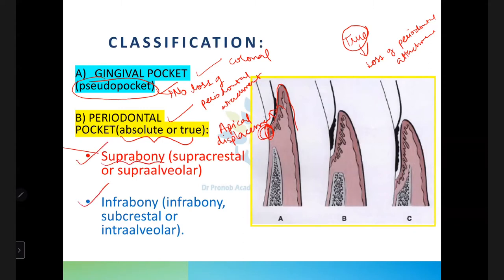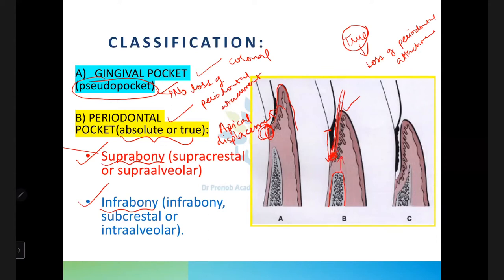In periodontal pockets there are two types: supra-bony and intra-bony. In a supra-bony pocket, the base of the pocket is above the bone — the epithelial attachment has migrated but the base of the pocket remains coronal to the alveolar bone. This is also called supra-crestal or supra-alveolar. In an intra-bony pocket, the base of the pocket is apical to the level of the alveolar bone.